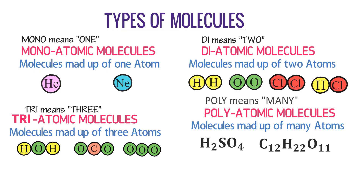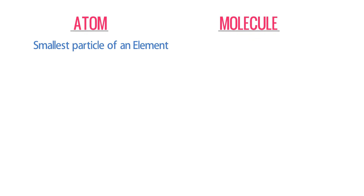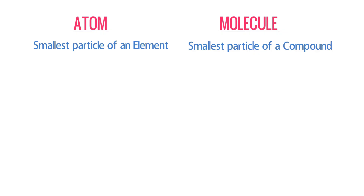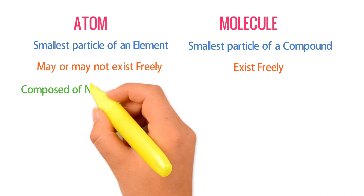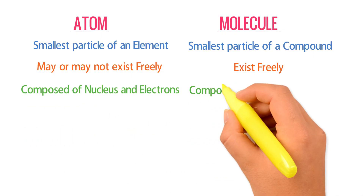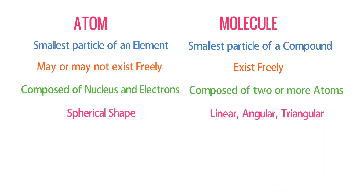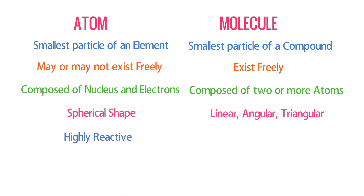Finally, the difference between an atom and a molecule: an atom is the smallest particle of an element, while a molecule is the smallest particle of a compound. An atom may or may not exist in a free state, while a molecule exists in a free state. An atom is composed of a nucleus and electrons; a molecule is composed of two or more identical or different atoms. Atoms have a spherical shape, while molecules may have linear, angular, or triangular shapes. Atoms are highly reactive; comparatively, molecules are less reactive.